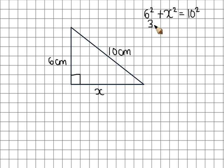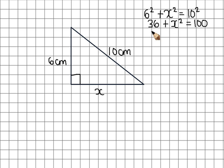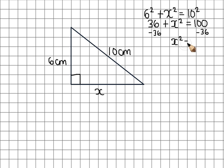So it's 36 plus x squared is 100. Now I'm trying to get it so it's x squared on its own so that I can solve it, so I need to take 36 from both sides of this equation. So that gives me x squared equals 64.